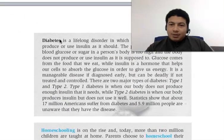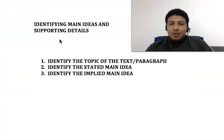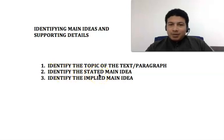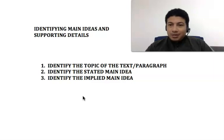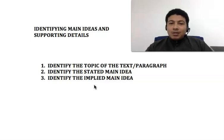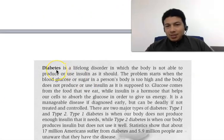Now that we have identified the topic, we can proceed with identifying the stated main idea. There are two types of main ideas: stated and implied — they are opposites. Stated main idea means what the author states, the purpose of the article or paragraph, written in the article itself. The stated main idea has to be in a sentence. If someone asks for the stated main idea, you don't just say 'diabetes' — that is the topic, not the stated main idea.